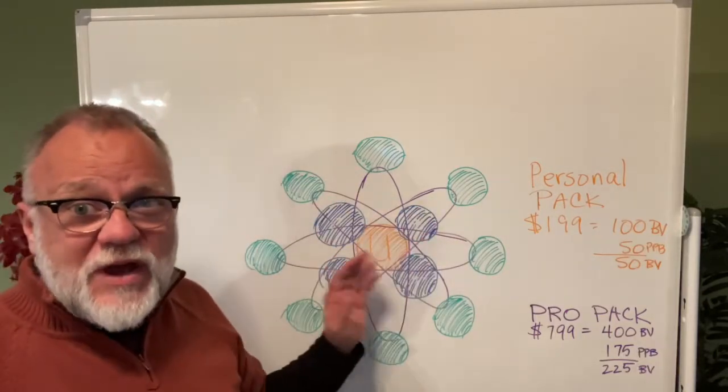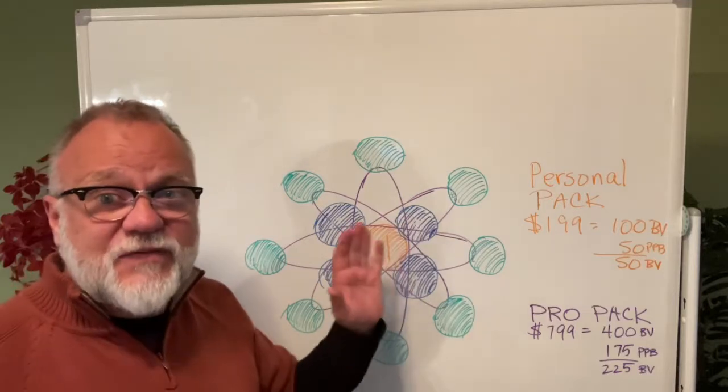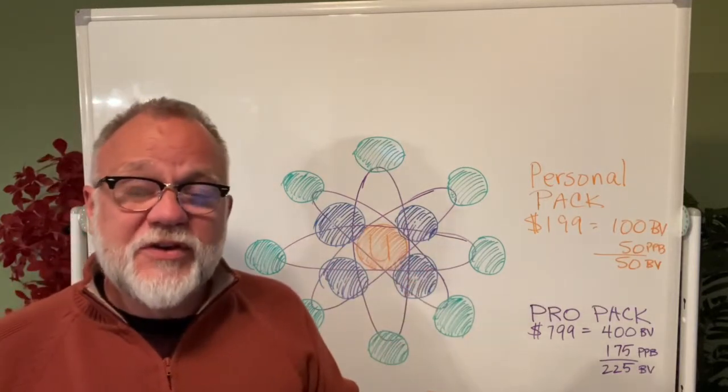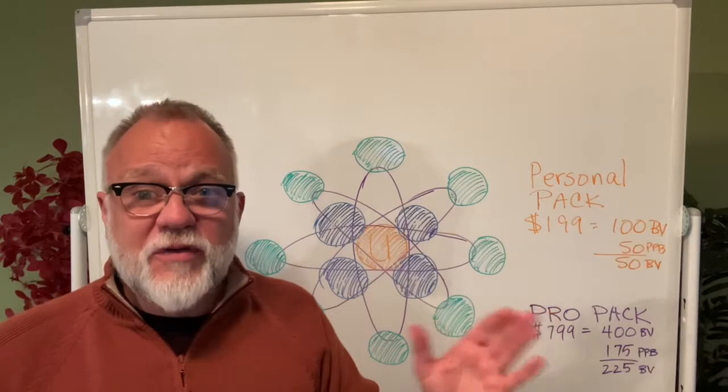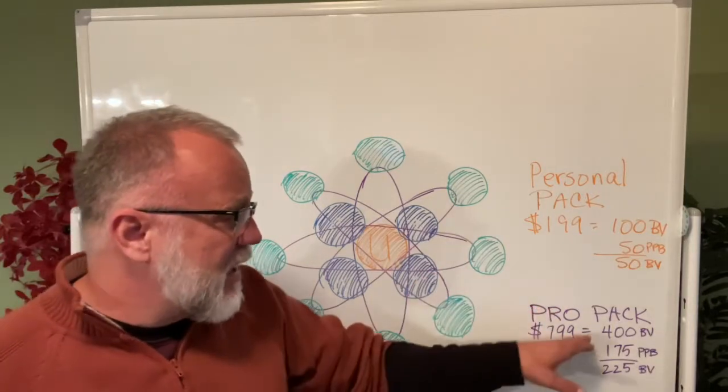You have to have 12 people in your organization to qualify as being what we call super affiliate rank in Ativa. So you can sponsor all 12 of these individuals or you can sponsor four and each of these can sponsor two, which gives you 12. Either way, you have to have a minimum of at least four people you personally sponsored out of the 12. You could have sponsored all 12 if you wanted to. Now, look at the pro pack.